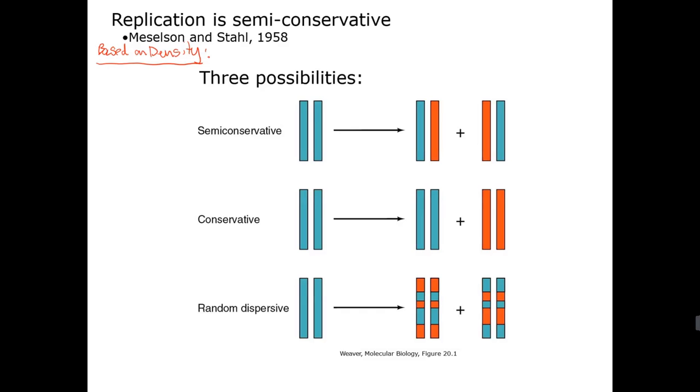So we know that normally nitrogen is N14. There's a nitrogen isotope N15. Normally we have the N14 and instead of that they added N15.